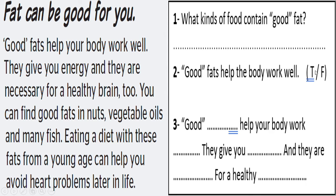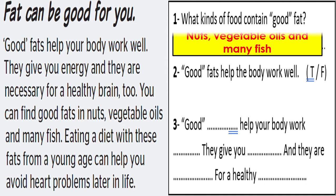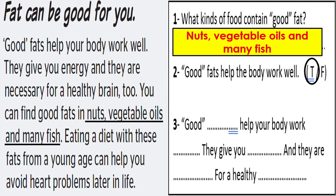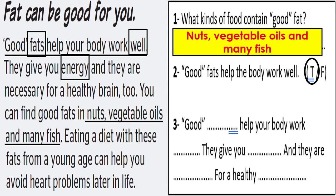Notice that this is a worksheet to examine your understanding of the text. It's an extra activity to make sure you understand how to deal with any reading text. 'Fat can be good for you' — what do you think? What kinds of food contain good fat? Read the text and answer the questions. The answer is: nuts, vegetable oils, and many types of fish. Move to number two: good fat helps the body work well — true or false? Excellent, it's true. Complete the sentence: good fat helps your body work well, gives you energy, and is necessary for a healthy brain.